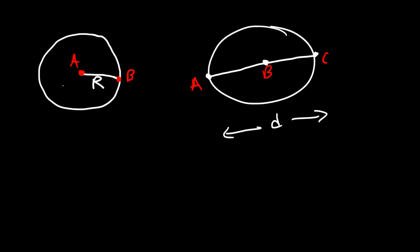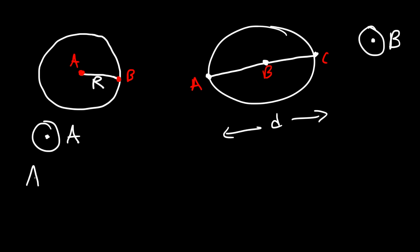On the left, the center of the circle is point A, so you can describe the circle based on that center point. On the right, you can describe the circle based on center point B. The area of a circle is π r squared, and the circumference of a circle is 2π r.